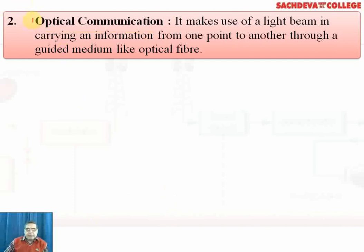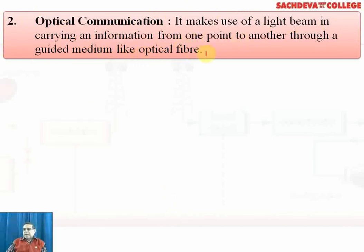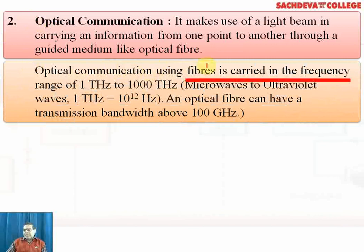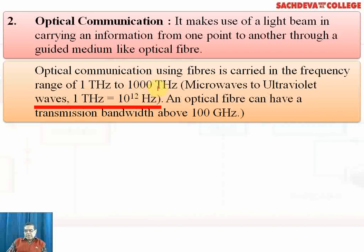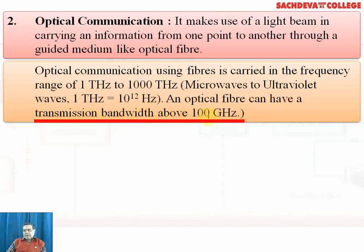Optical communication uses a laser beam to carry information from one point to another through a guided medium like optical fiber. Laser is ordinary light with a narrow beam; when it exits the optical fiber, it comes out with very great intensity. Optical fiber communication uses the frequency range of 1 THz to 1000 THz — microwave to ultraviolet waves — and can have a transmission bandwidth above 100 gigahertz.